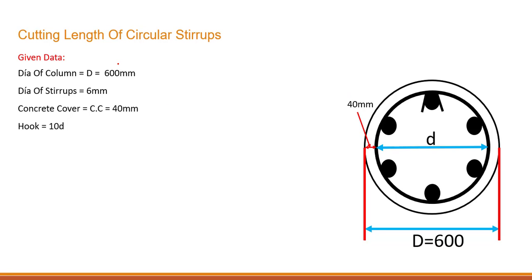Let's check the data over here. D, meaning the external dia, right from this position up till this position, it is 600 and dia of stirrup that we are using over here is 6 mm, concrete cover is 40 mm.